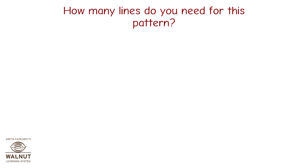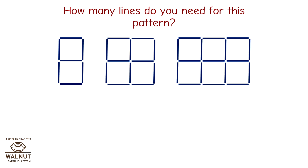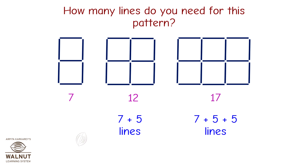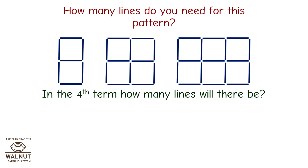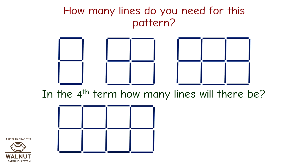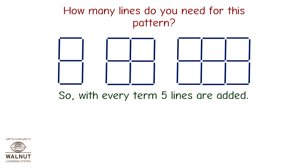How many lines do you need for this pattern? In the first term there are seven lines. In the second term there are twelve lines — that is seven plus five lines. In the third term there are seventeen lines — seven plus five plus five lines. In the fourth term there are twenty-two lines — seven plus five plus five plus five. So with every term, five lines are added.